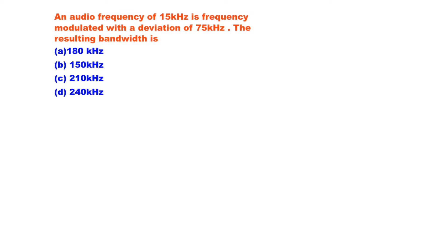So when you come to this problem, an audio frequency of 15 kHz is frequency modulated, means a carrier frequency, means message signal having the frequency of 15 kHz, and it is frequency modulated with a deviation of 75 kHz. Then what is the resulting bandwidth?